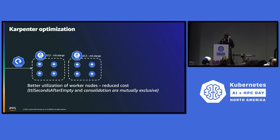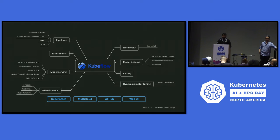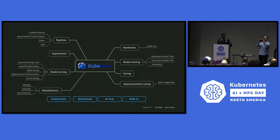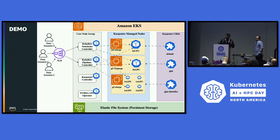Kubeflow is a popular MLOps platform for Kubernetes. It has notebooks, components for training models, feature store, hyperparameter tuning, pipelines running Argo workflows under the hood, experiment tracking, and model serving using KServe. Because Kubeflow is on Kubernetes, you can run it across clouds and on-prem.